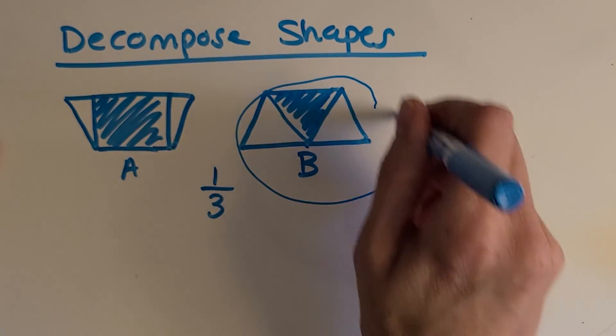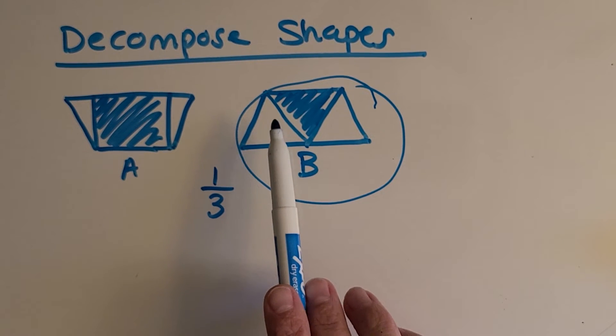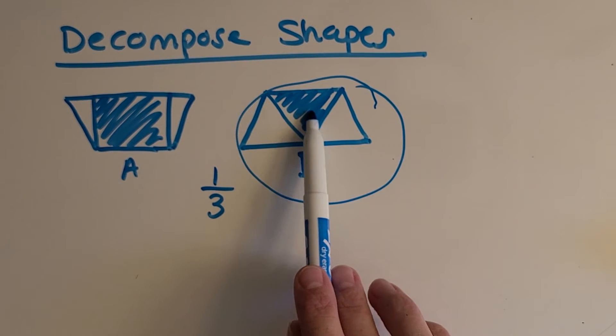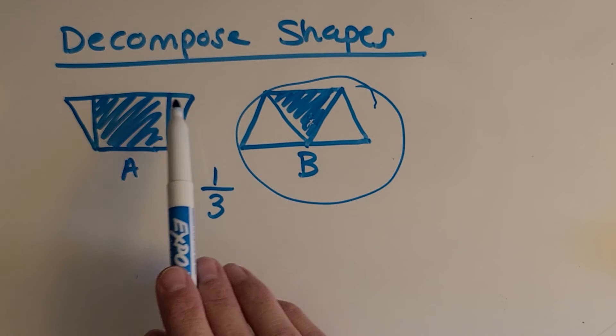Ding, ding, ding, you got it. B, choice B is the correct one. Because it has three equal triangles and one of them is shaded. What makes A incorrect? A lot of you are saying, well, it's not the same shapes.